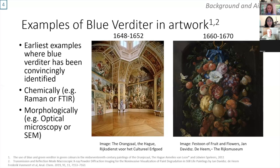They identify blue verditer both from its chemistry, differentiating it from other blue pigments, and morphologically differentiating it from natural azurite.